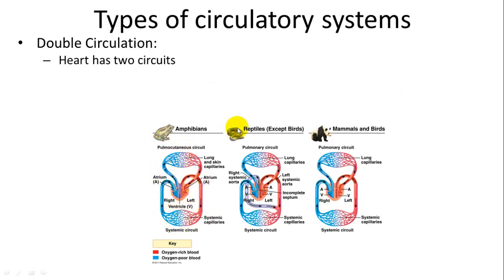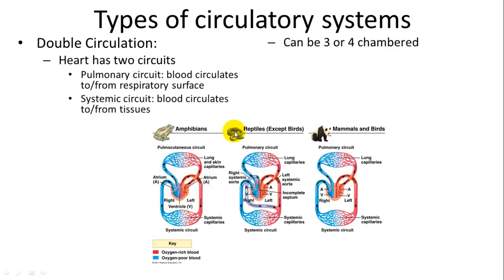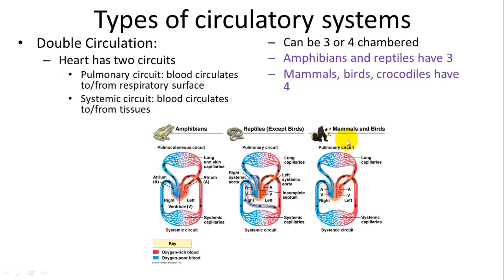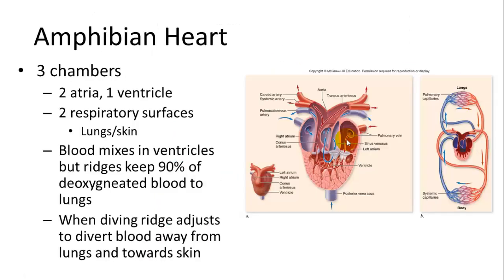Double circulation is used by amphibians, reptiles, mammals, birds, and crocodiles. It has two circuits: one going to the respiratory tissue or lungs, and another to the systemic tissues. The heart can be three or four chambered — amphibians and reptiles have three chambers, while birds, mammals, and crocodiles have four. The amphibian heart has two atria and one ventricle, so oxygenated and deoxygenated blood mix in the ventricle, but deep folds in the ventricle keep most of the blood separated, allowing oxygenated blood to reach tissues and deoxygenated blood to reach the lungs.